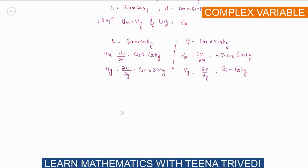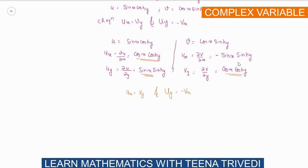Now we check the CR equations. ∂u/∂x = cos(x)·cosh(y) and ∂v/∂y = cos(x)·cosh(y), so ∂u/∂x = ∂v/∂y. ✓ Also, ∂u/∂y = sin(x)·sinh(y) and −∂v/∂x = −(−sin(x)·sinh(y)) = sin(x)·sinh(y), so ∂u/∂y = −∂v/∂x. ✓ Since the CR equations are satisfied, the function is analytic.